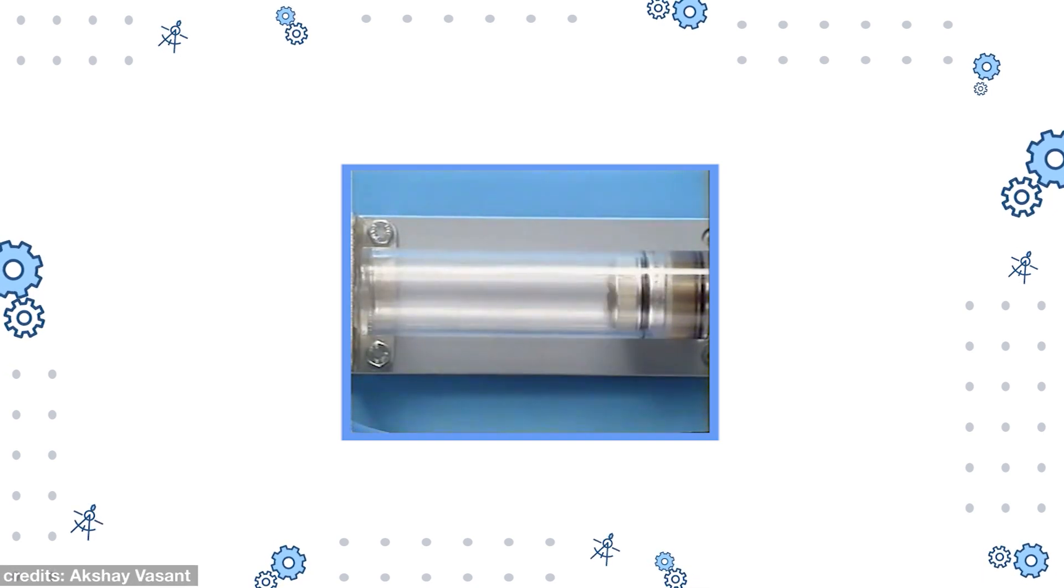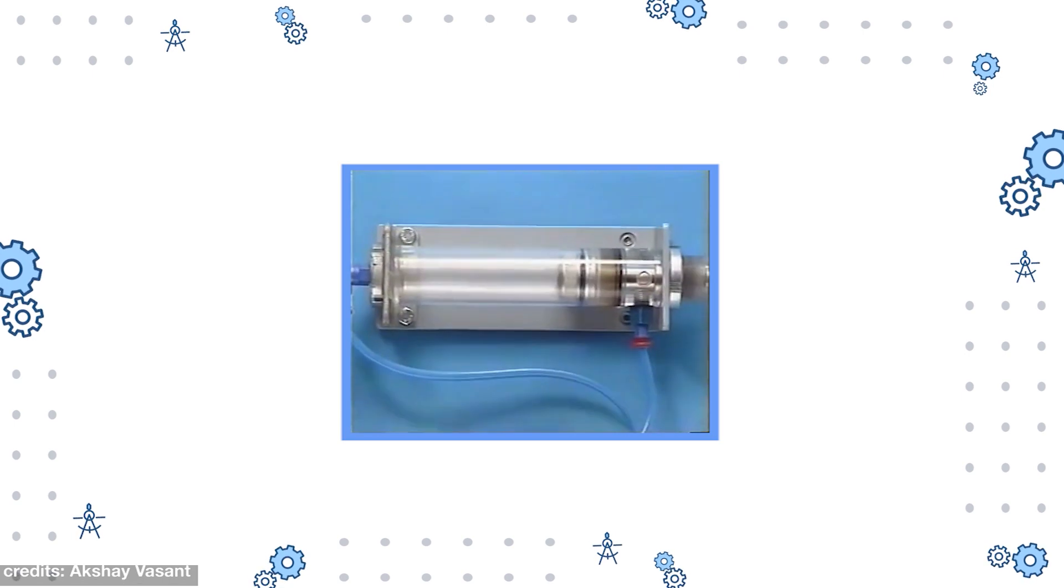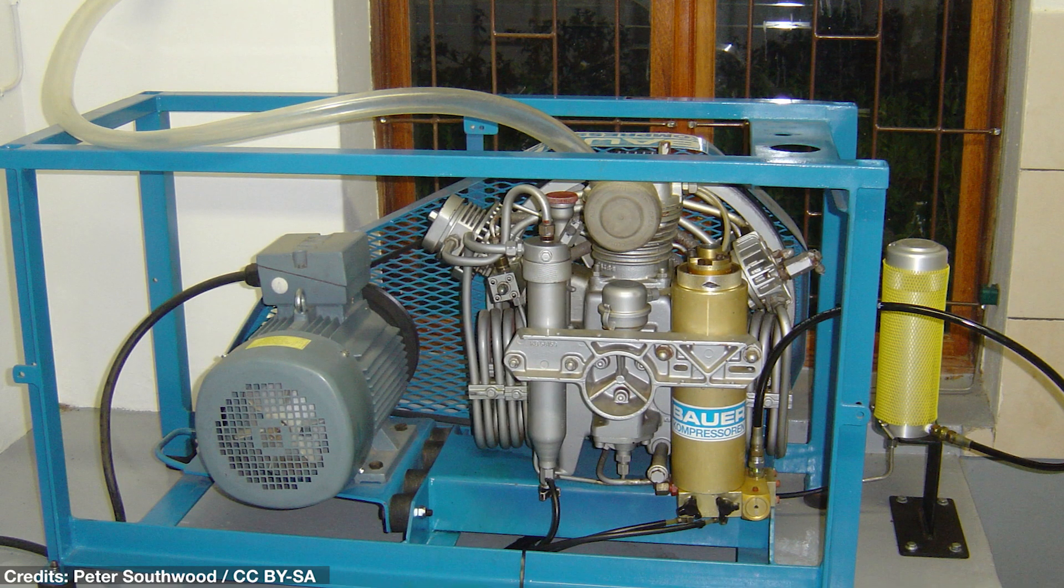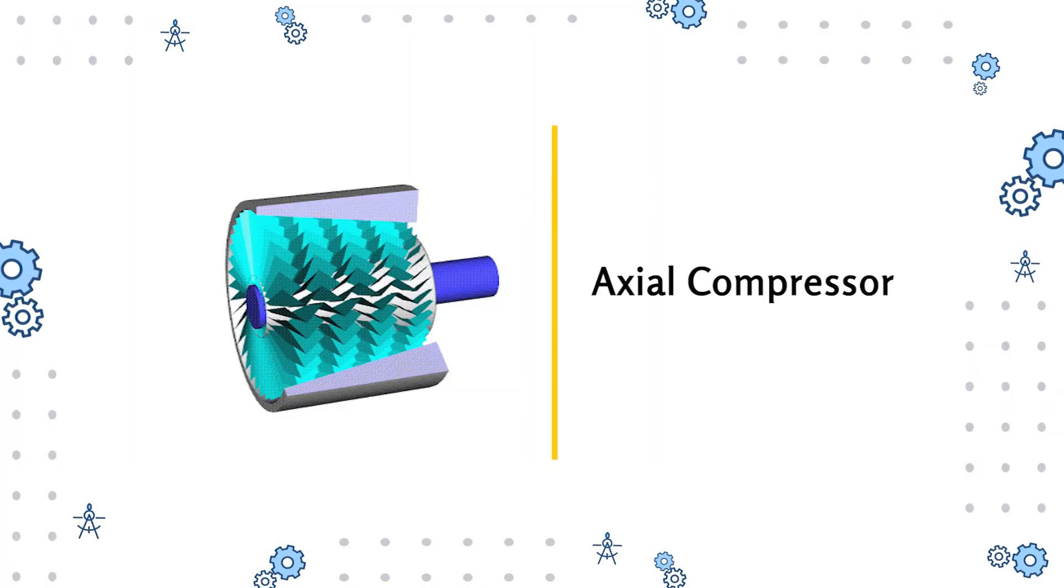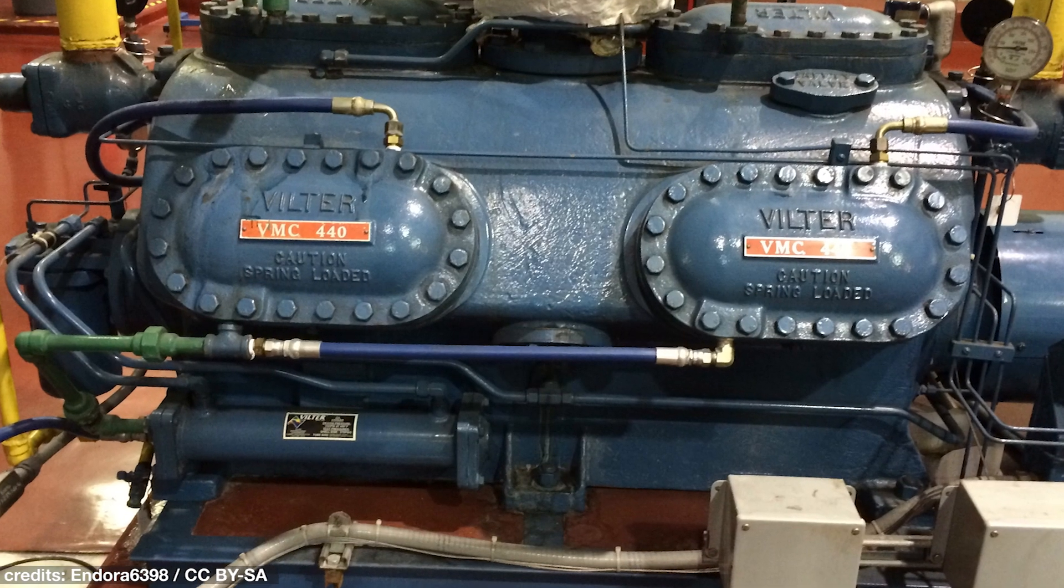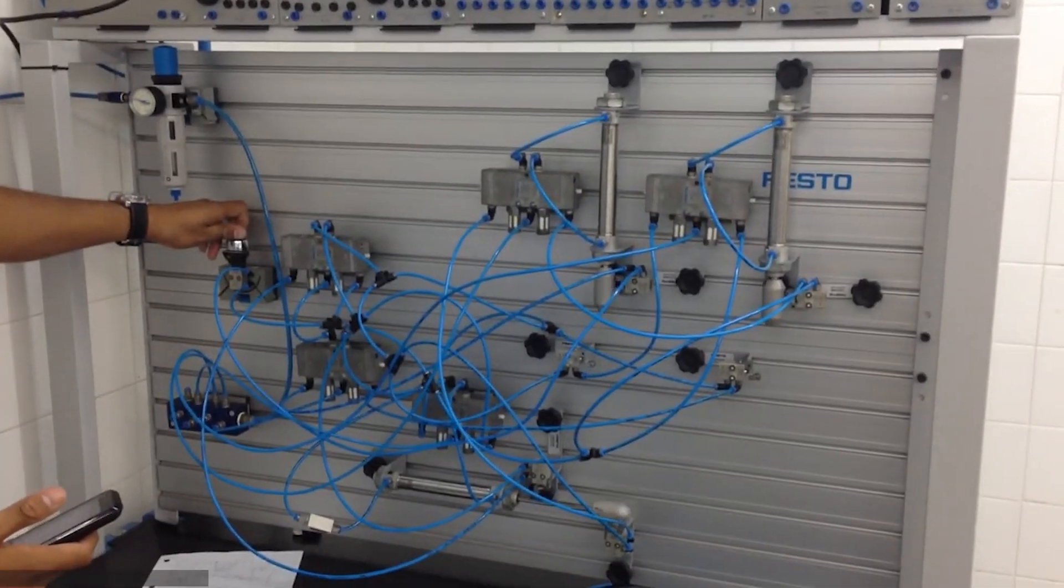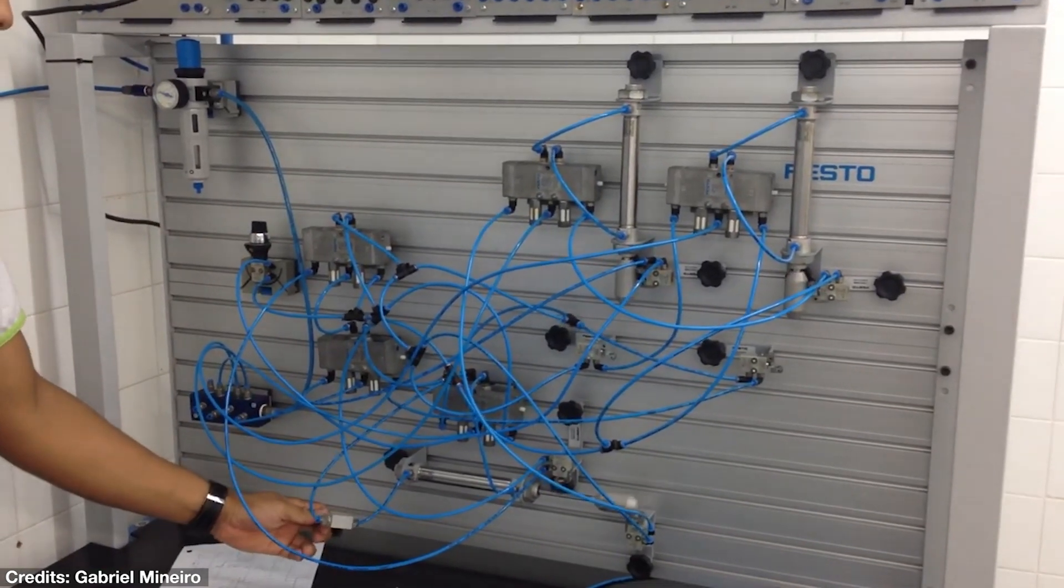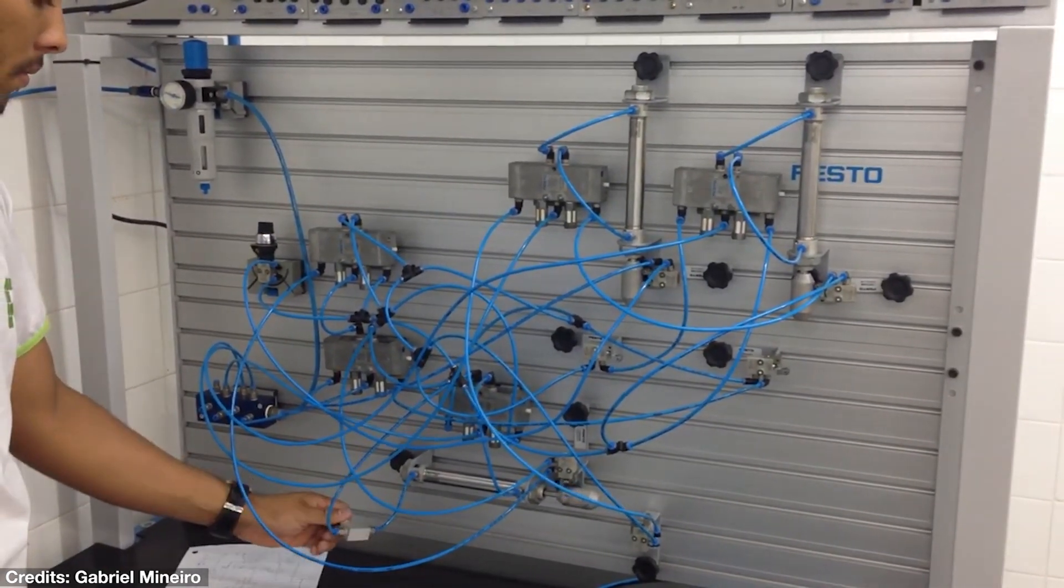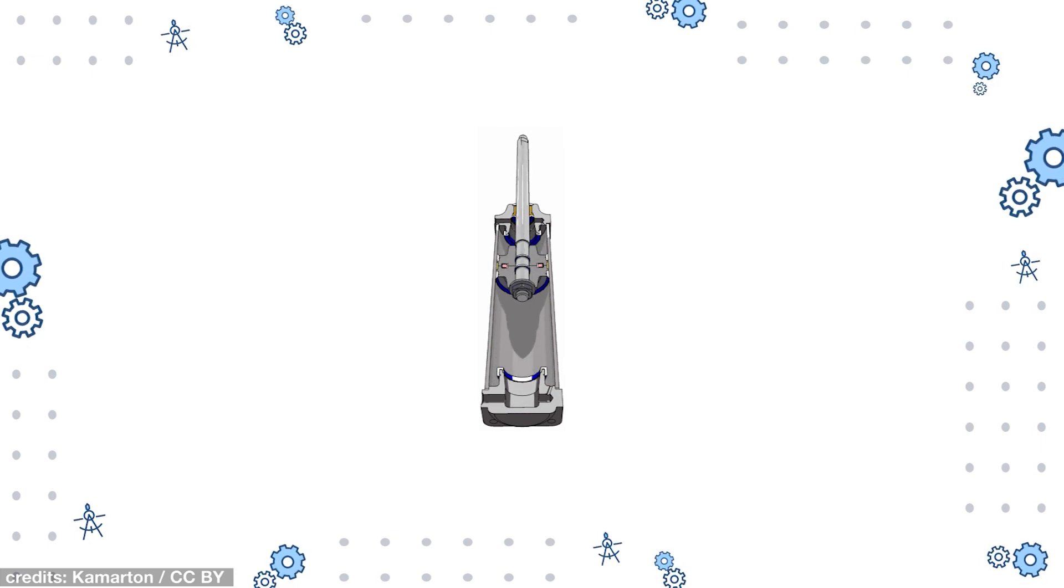Now, moving on to the pneumatic system, which essentially uses similar components to move compressed air in the system. In a pneumatic system, an electric motor is used to drive a compressor. The atmospheric air is then filtered and compressed by the compressor. This compressed air is then stored in an air tank. Similar to a hydraulic system, a pneumatic system also uses valves to control the pressure, flow, or direction of compressed air. But here, pneumatic actuators are used to obtain mechanical movement.